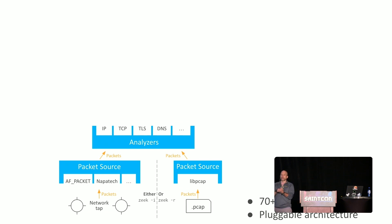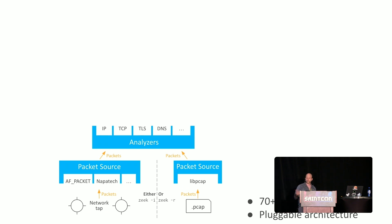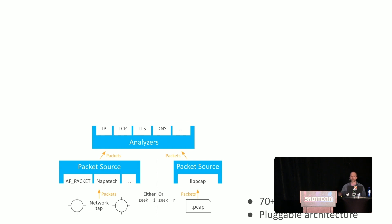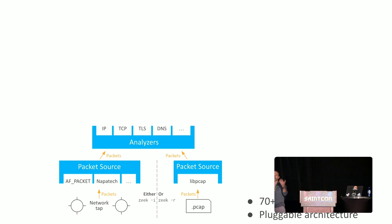Zeek takes that packet source and runs it through a driver — like AF_PACKET, NAPATECH, or libPCAP. It then sends that information up to over 70 protocol parsers, including IP, TCP, TLS, and DNS. We also have OT protocol parsers. CISA just released the ICSNPP — the ICS network protocol parsers — on GitHub, and those are integrated as well.